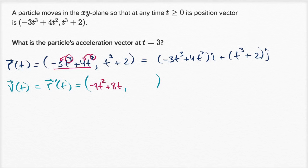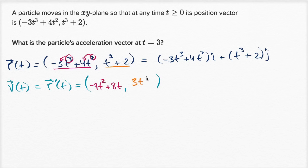For the y component, the derivative of t to the third with respect to t is three t squared, and the derivative of the constant two is zero. So the y component of velocity is three t squared.